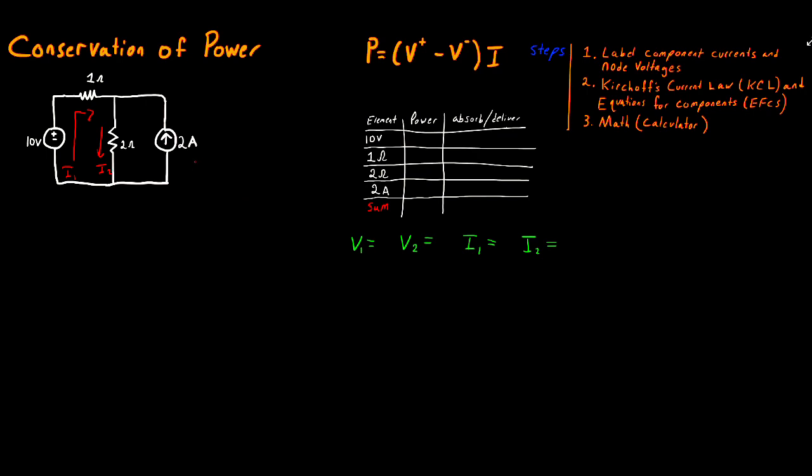Now for the 2 amp source, I could define some sort of I3 current for it, but that's kind of redundant because we know the value for this current source is 2 amps and we know the direction it's going. So at this point we're done with labeling our component currents, and we can move on to labeling our node voltages.